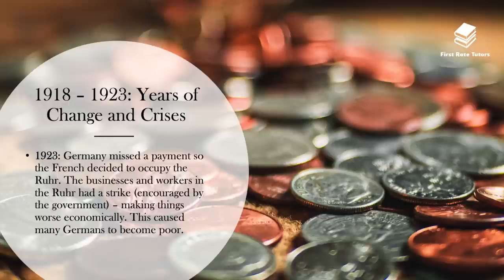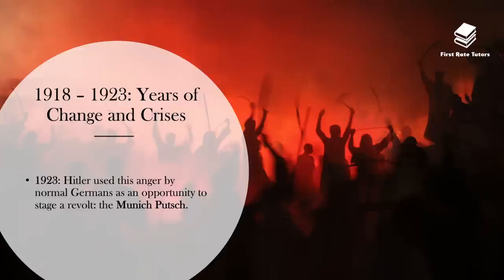Germany missed a payment, so France, which was very hardline in its approach to Germany, decided to occupy the Ruhr, which was a very industrious part of Germany. The businesses and workers in the Ruhr had a strike, which was encouraged by the government, making things even worse economically, and this caused many Germans to become poor.